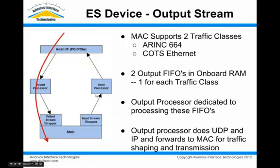The ARINC 664 MAC has the ability to process two classes of traffic. We have two independent FIFOs that we can write frames to in the MAC for output. One is for critical traffic or ARINC 664 traffic, treated at higher priority, and the other is for COTS Ethernet — standard IEEE 802.3 Ethernet. This means the card can manage and send standard Ethernet data at the same time it's doing ARINC 664 traffic shaping.